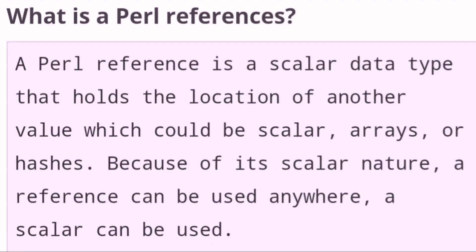What is a Perl reference? A Perl reference is a scalar datatype that holds the location of another value, which could be a scalar, array, or hash. Because of its scalar nature, a reference can be used anywhere a scalar can be used.